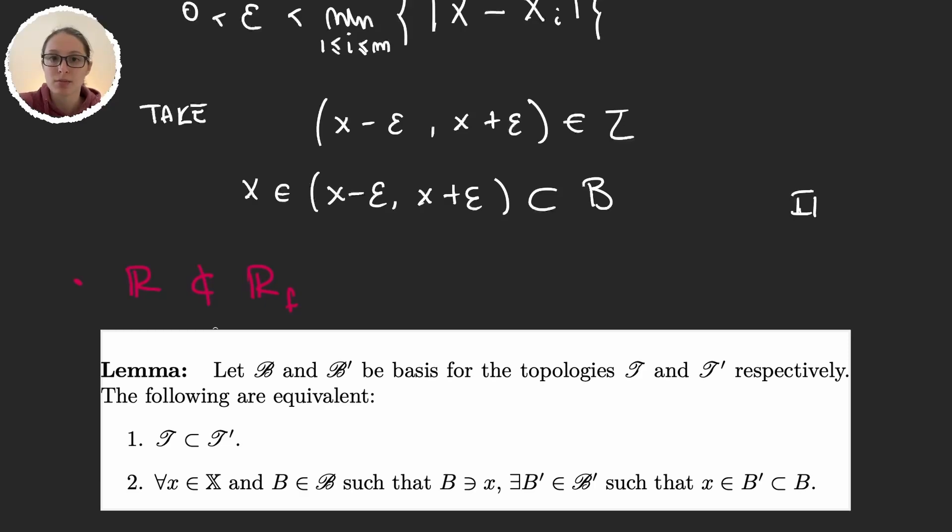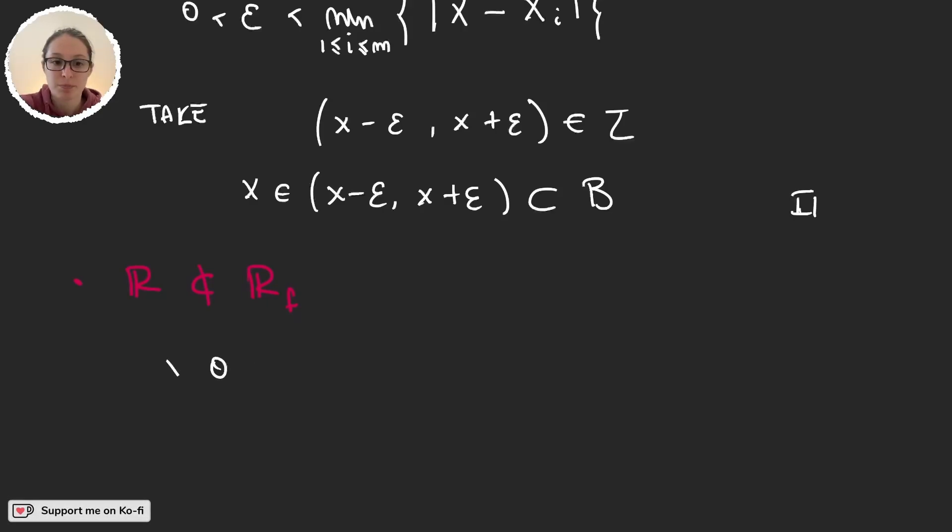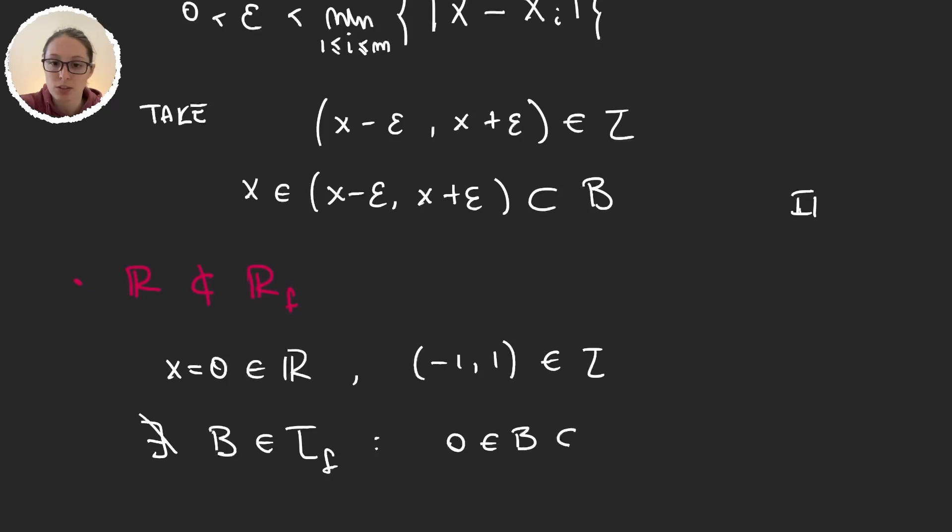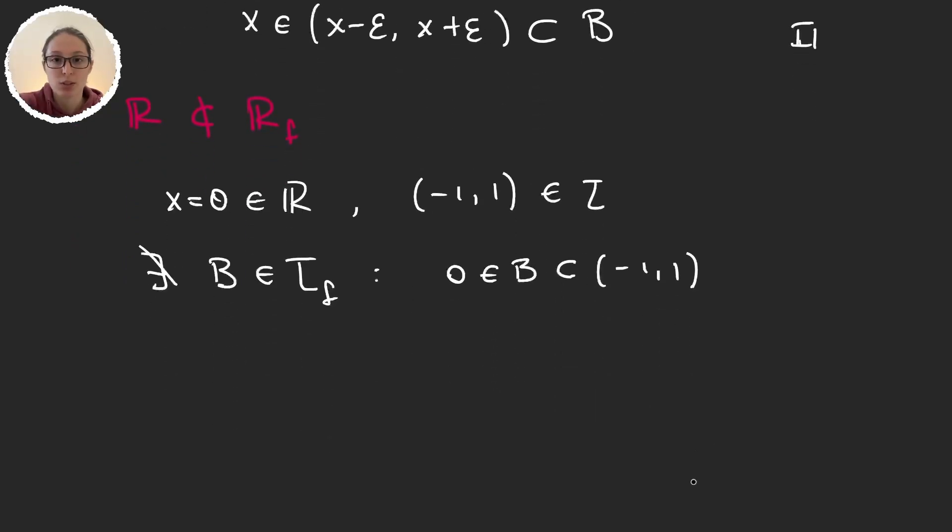And say that there are no elements in the finite complement topology for which we have the inclusion. So we can just take 0 to be x. This is obviously a number in the real line. Minus 1, 1 is a neighborhood in the standard topology of 0. But there doesn't exist B in the lower limit topology such that 0 is a subset of B contained in the minus 1, 1. This cannot happen. Why? Well, it's very simple. Let's suppose there is.